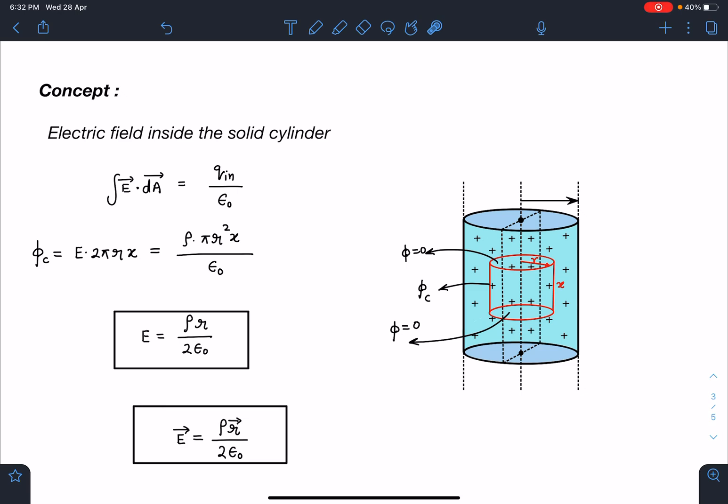The field is radial for line charges. Similar field will be there for solid cylinder also. Flux passing through this flat surface is going to be 0 because electric field will be perpendicular to area vector. Flux will be passing through this curved surface of cylinder. So I can write phi curve equals E times 2πrX equals charge inside. Charge inside will be density multiplied by volume which is πr²X by epsilon naught. When I simplify this, I am going to get E equals ρr by 2ε₀, which is E equals ρr vector by 2ε₀.